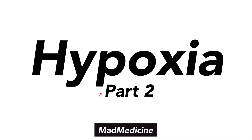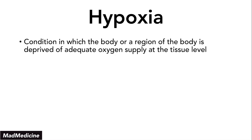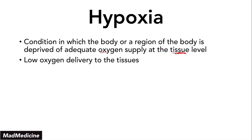With that being said, let's discuss hypoxia part two by doing a quick review of the concept of hypoxia in general. Hypoxia is a condition where you have a decreased oxygen supply at the tissue level, whether it's your entire body or a region of your body. Essentially, you have low oxygen occurring at the tissue level that's causing a lot of problems.